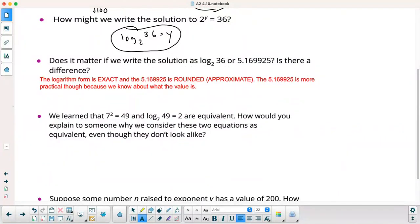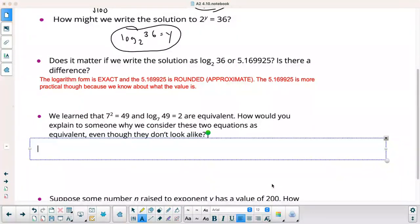We learned that 7 squared equals 49. Log base 7 of 49 equals 2 are equivalent. How would you explain to someone why we consider these two equations as equivalent, even though they don't look alike? What I would say to them is they are just in different forms. One is in exponential form and the other is in logarithm form.